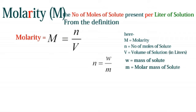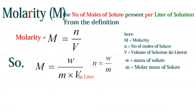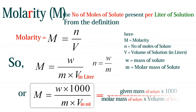Putting in the equation, we get M = W / (M × V), where V is in liters. The equation becomes: molarity is equal to the given mass of the solute multiplied by 1000, divided by the molar mass of the solute multiplied by the volume of the solution in mL.